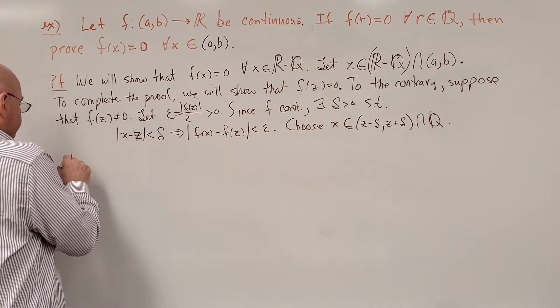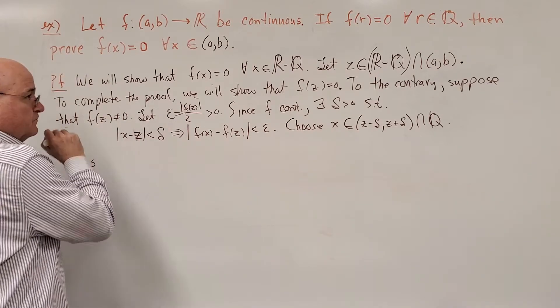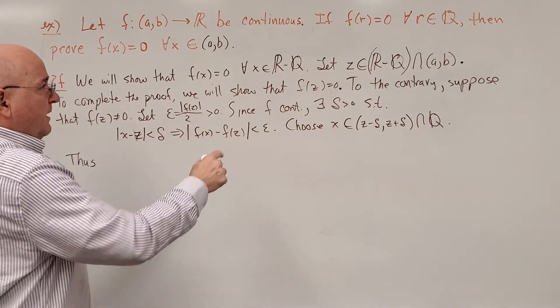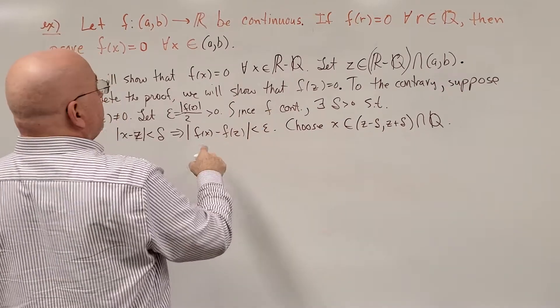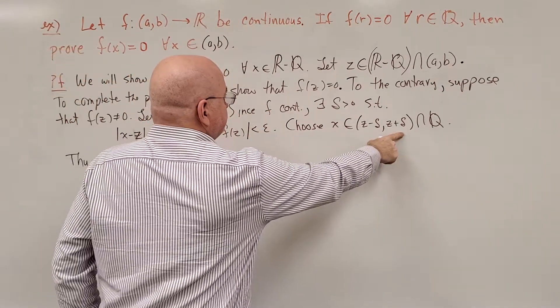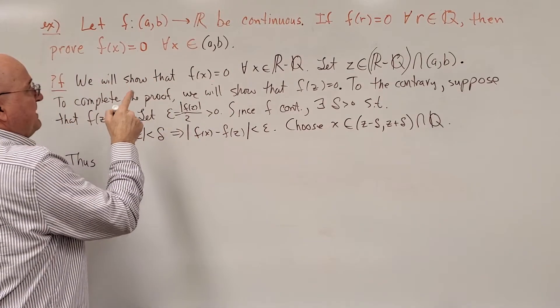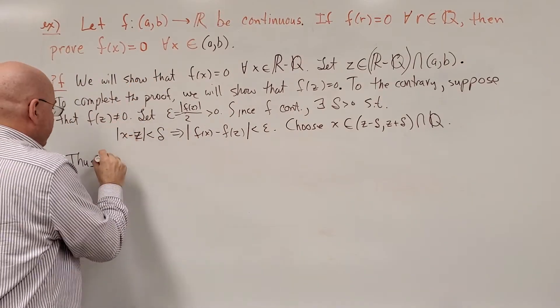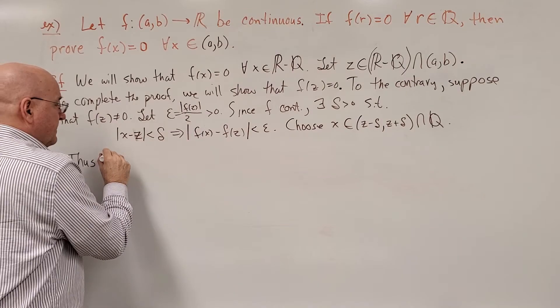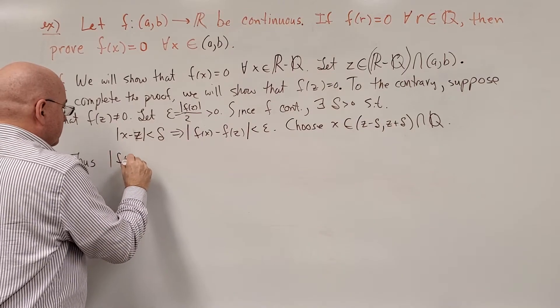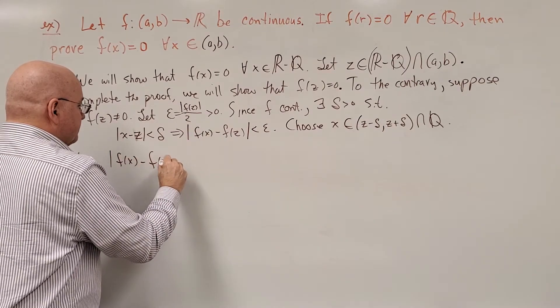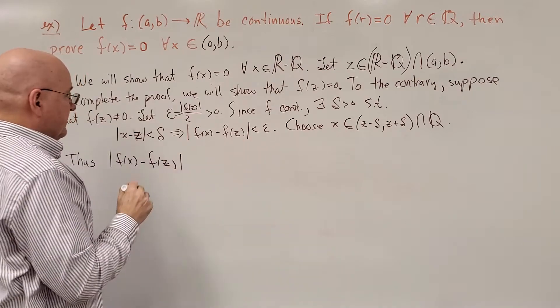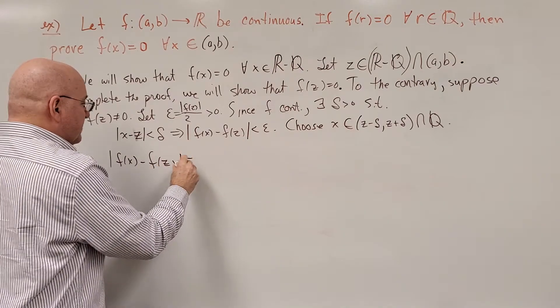All right. Thus, since this is true and because f is continuous we get |f(x) - f(z)|. Well, it has to be less than epsilon but we actually know what this is.